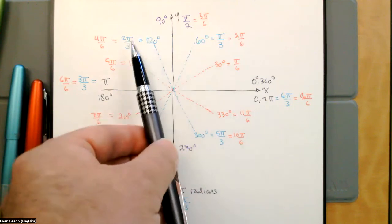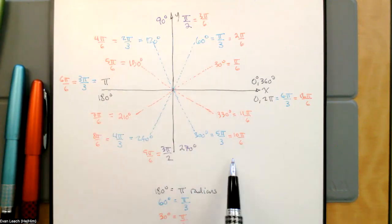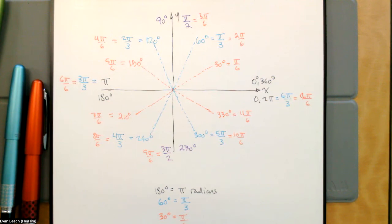Pi over 3, 2 pi over 3, 4 pi over 3, 5 pi over 3 — four angles that we can't simplify further. We keep seeing pi over 3, and we know that pi over 3 is 60 degrees, so those must be the 60-degree reference angles: 60, 120, 240, and 300.